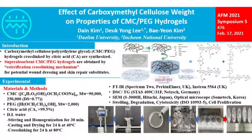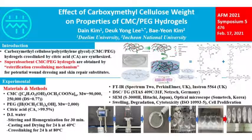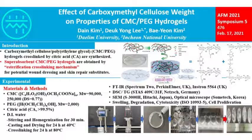CMC and PEG ratios from 10:0 to 8:2 were dissolved in distilled water. CMC and PEG solution were used with a cross-linking citric acid at 5 weight percent, enabled in the range of 10 to 25 weight percent, and homogenized for 3 minutes. Then, 10 mL of the precursor solution was poured into a 50 mL diameter plastic mold. After drying at 40°C for 20 hours, the sample was slowly evaporated at 80°C for 24 hours for the cross-linking reaction, producing CMC/PEG/CA hydrogel.